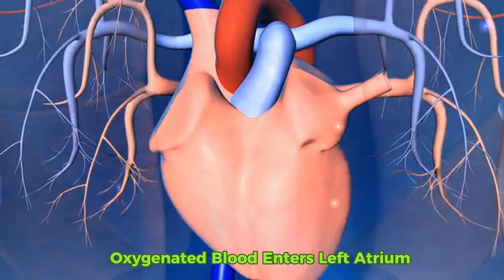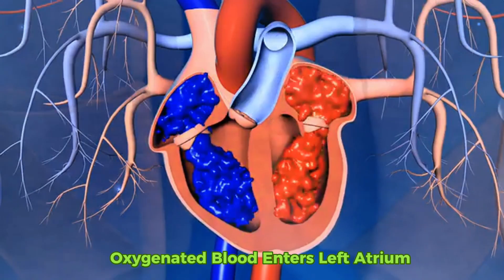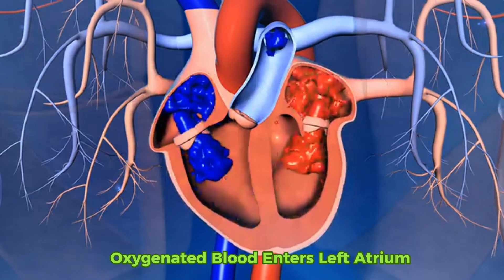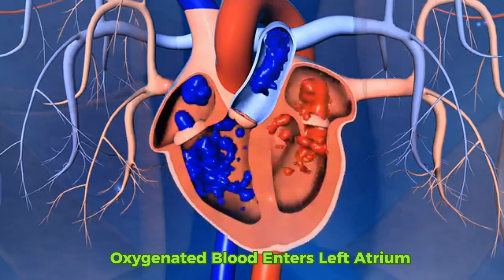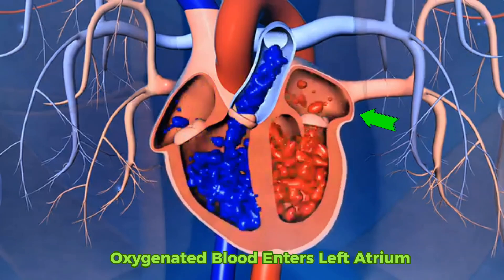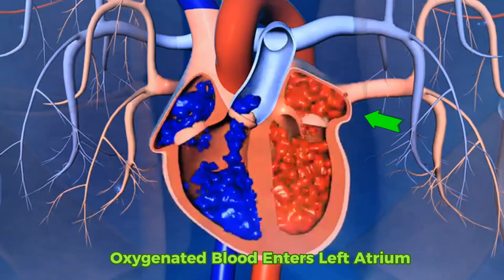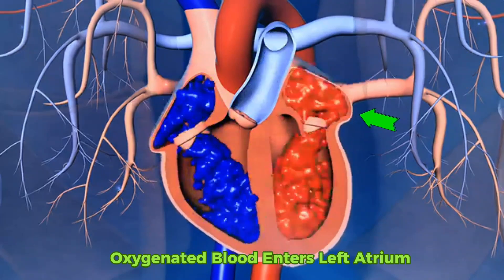Number five: oxygenated blood leaves the lungs and returns to the heart through the pulmonary veins and enters the left atrium.